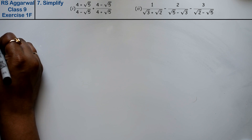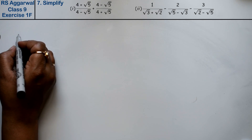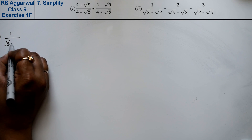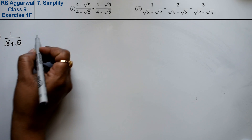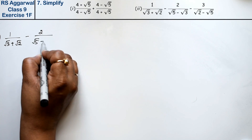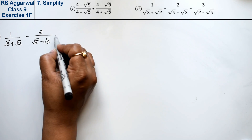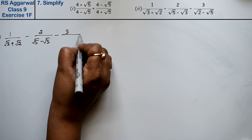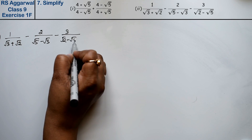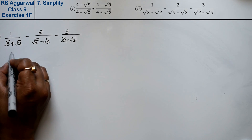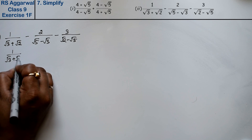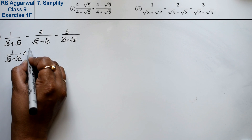Let's do the second part. Part 2 is: 1/(√3 + √2) - 2/(√5 - √3) - 3/(√2 - √5). First, I'm rationalizing the term 1/(√3 + √2).